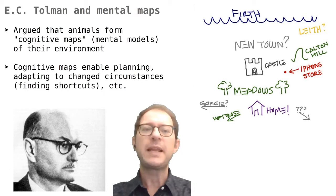When a person draws a map like this, we know that they can use it to find their way around. For example, if you are at the castle, you will know how to get to the iPhone store.